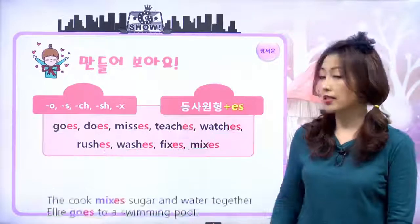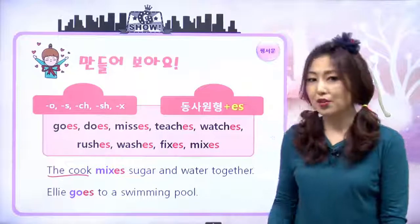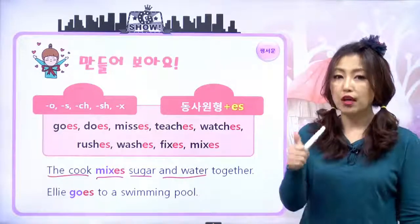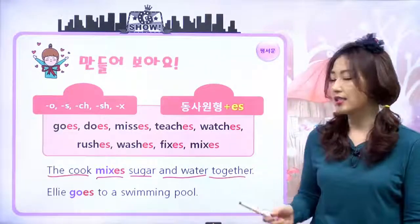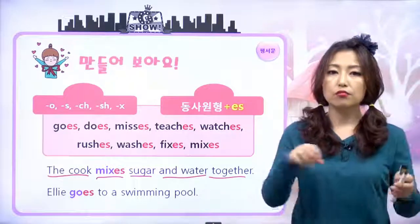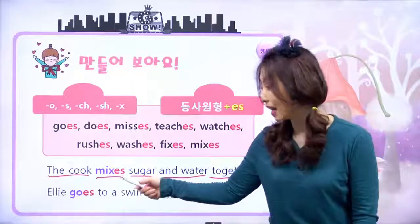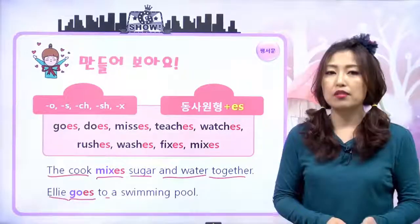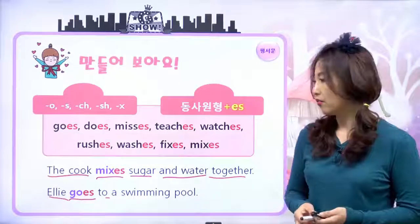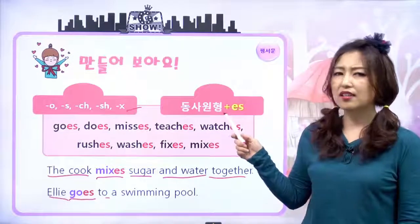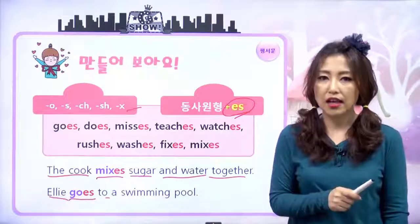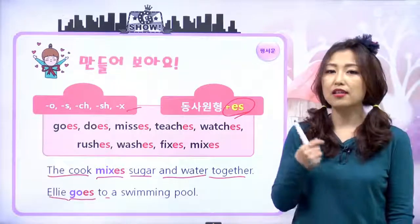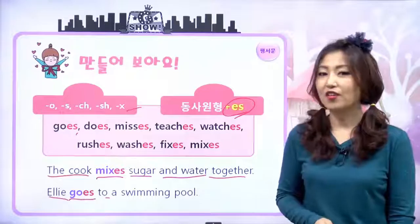그러면 이 동사들의 예시를 한번 볼게요. the cook, 그 요리사는 mixes, 섞어요. sugar and water, 설탕과 물을 together, 같이. 그 요리사는 설탕과 물을 함께 섞는다. Ellie는 goes, 가요. to a swimming pool, 수영장에 간다. 이렇게 끝나는 동사에는 그냥 s가 아니라 es가 붙는다 라고 꼭 기억하셔야 해요.